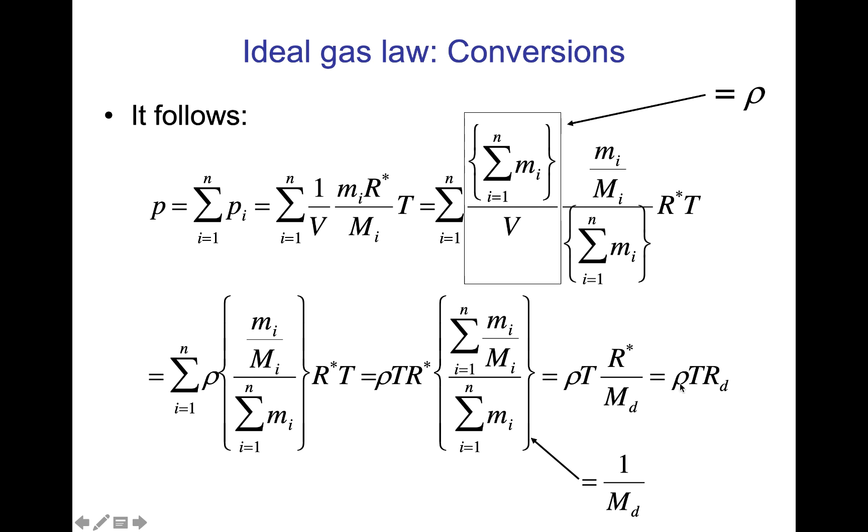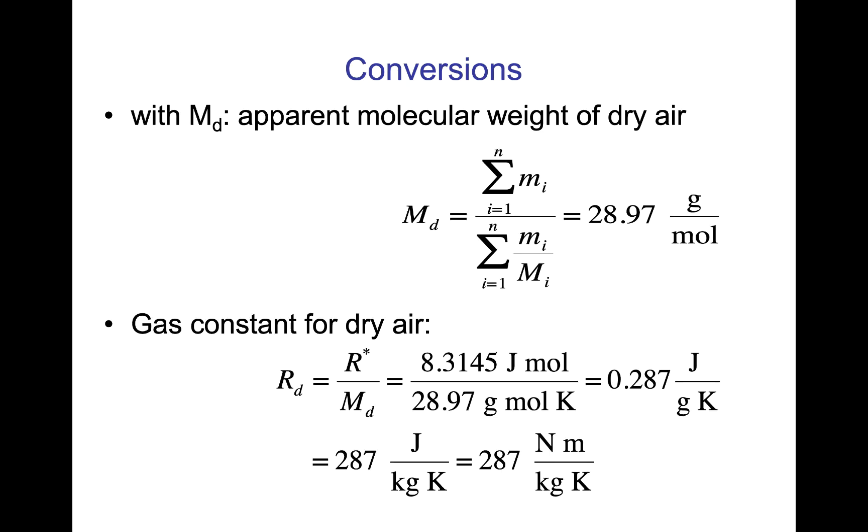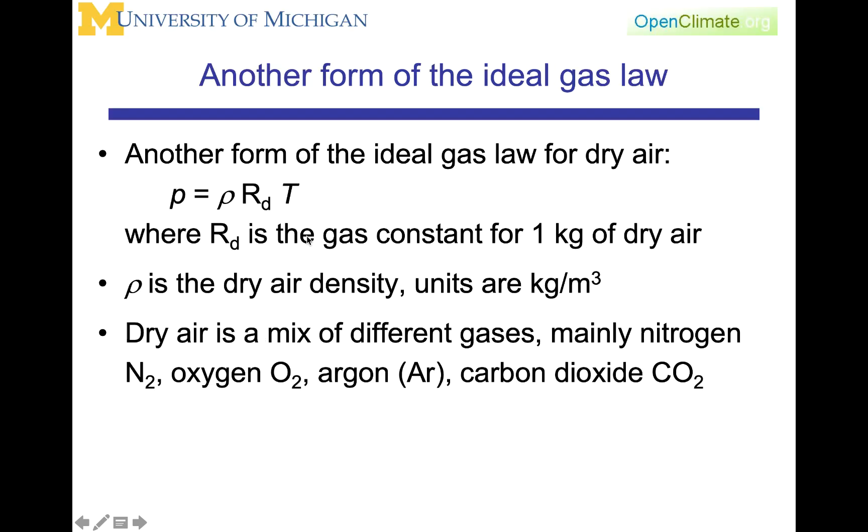Another form replaces rho with specific volume, where rho is one over specific volume, usually recognized as alpha, introduced earlier in our thermodynamics discussion. MD is 28.97 grams per mole. The gas constant for dry air is 287 newton meters per kilogram Kelvin. So P equals rho RD T, where rho is density in kilograms per meter cubed, and dry air is primarily nitrogen, oxygen, argon, and carbon dioxide.